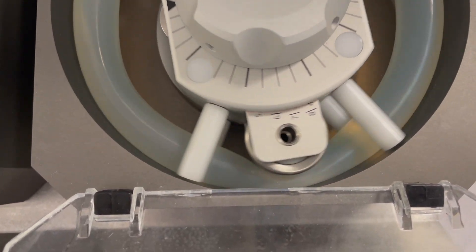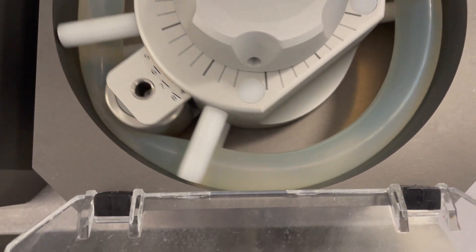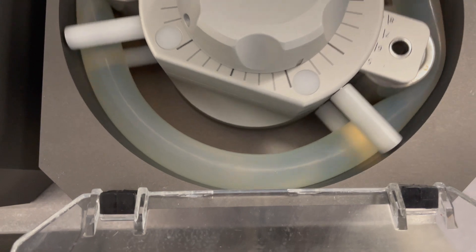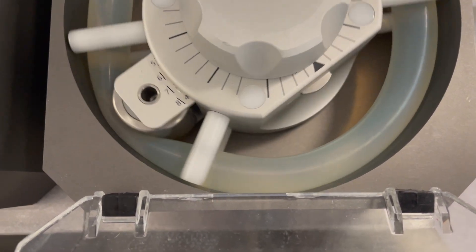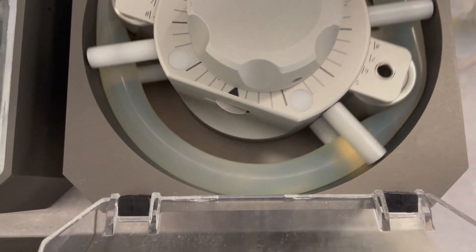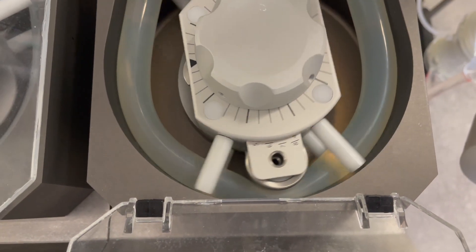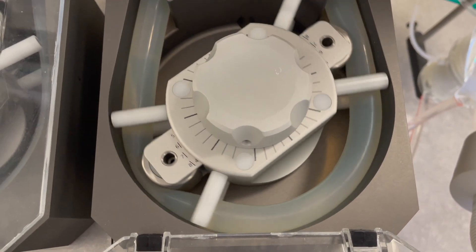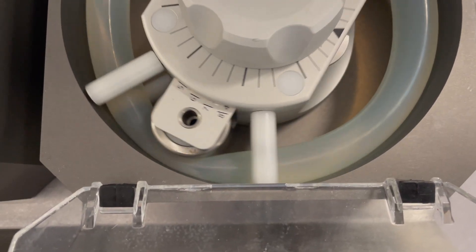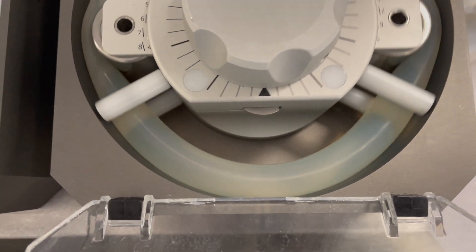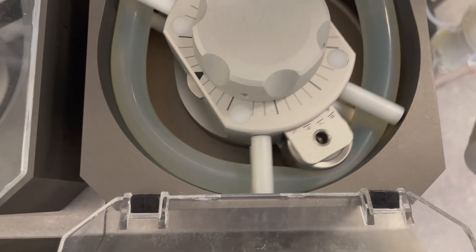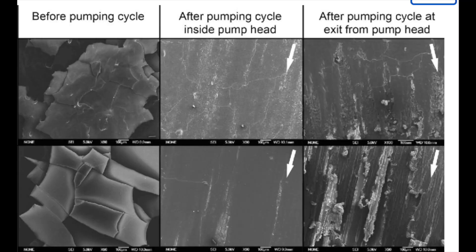In cardiopulmonary bypass, you may often hear the term spallation. When the tubing is repeatedly compressed in the pump roller heads, this intermittent compression can degrade the integrity of the tubing wall and may cause plastic microparticles to be released.